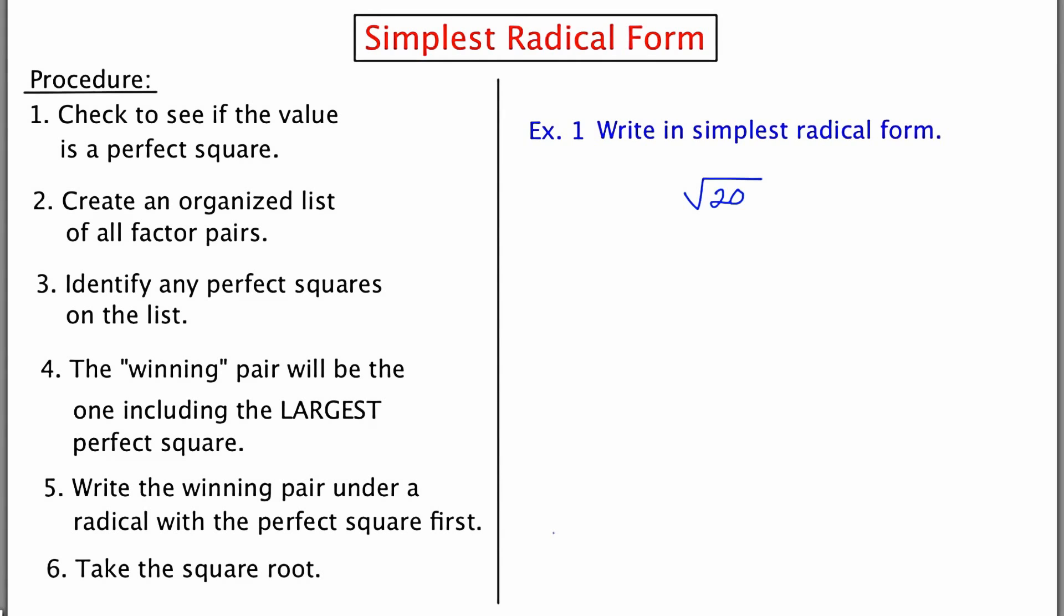The first thing that you want to do is ask yourself if the number under the radical is a perfect square. The number 20 is not a perfect square. If you were to try to take its square root on the calculator, you would not get a whole number answer. Then we go to step two.